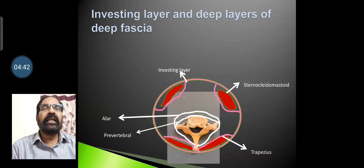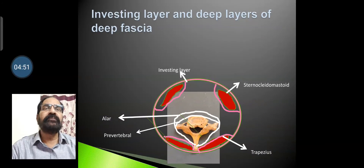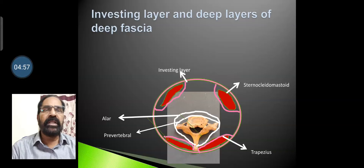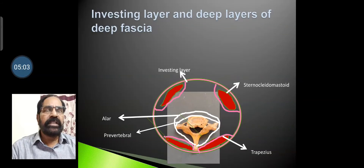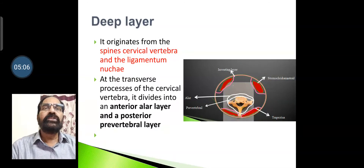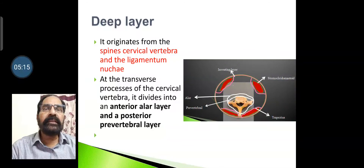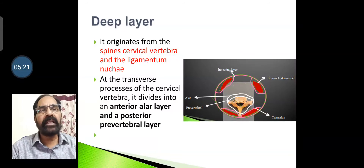The deep layer is shown here alongside the investing layer. The deep layer divides into two parts: the anterior one is called the alar layer, and the posterior one is called the pre-vertebral layer, which encloses the muscles of the vertebral column. The deep layer originates from the spines of the cervical vertebrae and the ligamentum nuchae. At the transverse process of the cervical vertebra, it divides into an anterior alar layer and a posterior pre-vertebral layer.